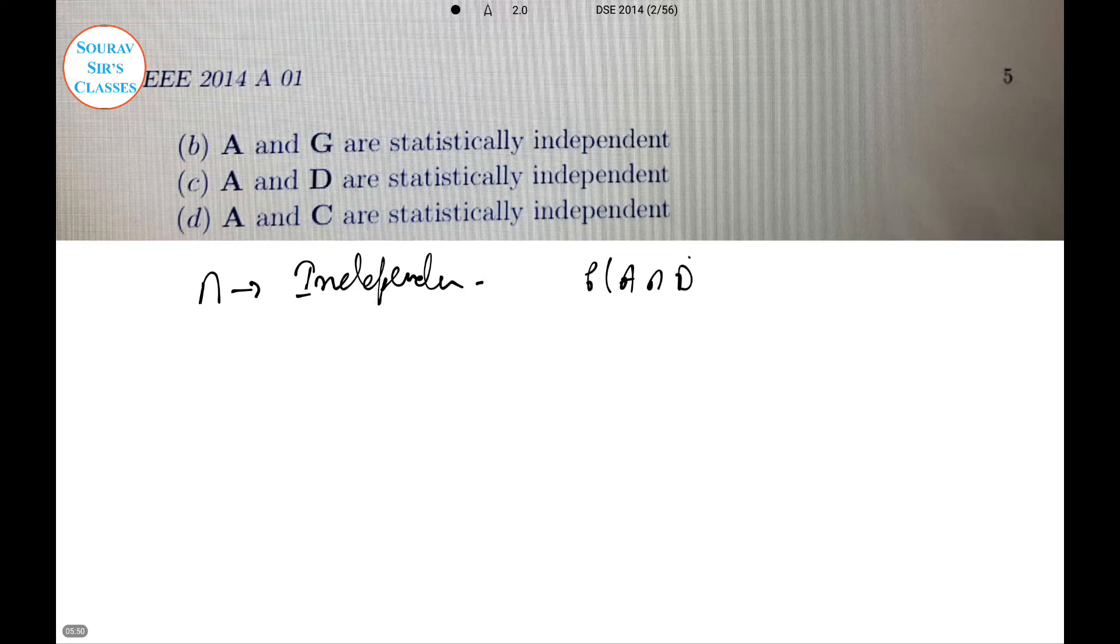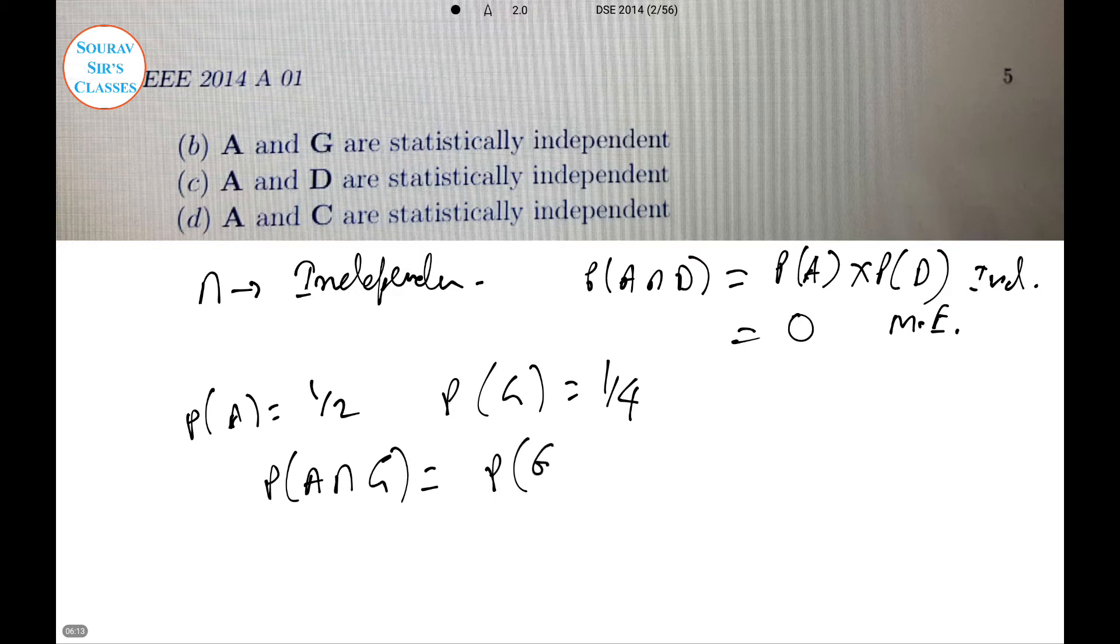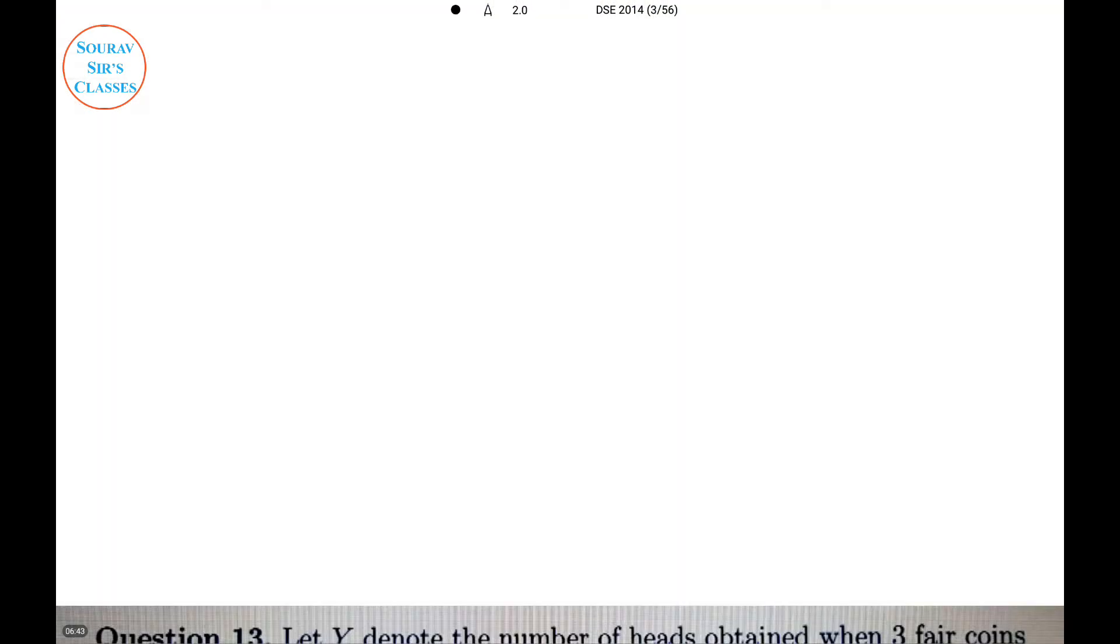In this particular case, probability of A is one-half, probability of G is one-fourth. Probability of A intersection G is probability of G, which is one-fourth. That is not equal to the product of P of A times P of G, which is 0.125. So ultimately A and G are not independent. Therefore the statement that A and G are statistically independent, option B, is false.